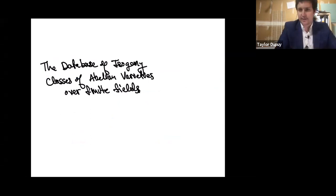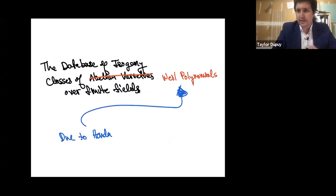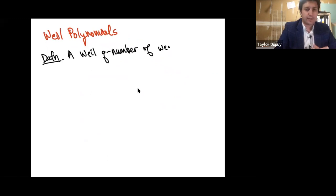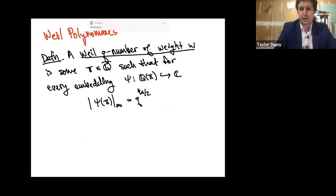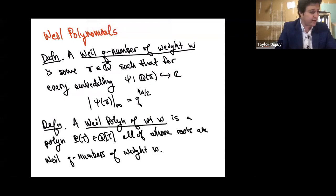We made a database of isogeny classes for abelian varieties over finite fields. The way we do this is using Weil polynomials. The reason we can do this is because of the Honda-Tate theorem, which says that these Weil polynomials are going to be in bijection with isogeny classes of abelian varieties. A Weil Q-number of weight W is an algebraic number such that for every embedding into the complex numbers, it has absolute value Q to the W over two. A Weil polynomial of weight W is a polynomial all of whose roots are Weil Q-numbers.